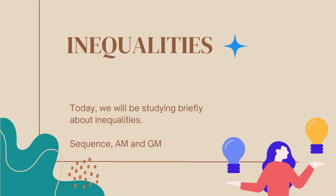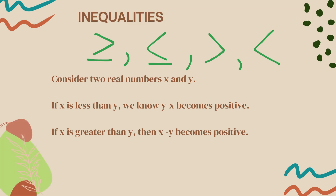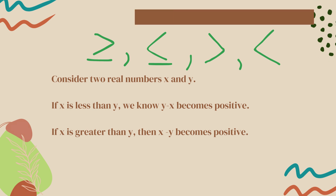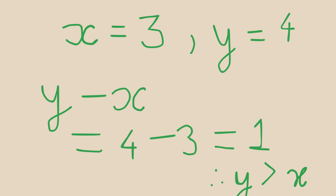So you must have seen the signs of inequalities. I have written down some signs of inequalities. You can clearly see there are signs such as greater than or equals to, less than or equals to. These are all called the signs of inequalities. To understand inequalities better, I have considered two real numbers x and y. I have assigned x the value of 3 and y the value of 4.